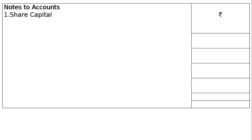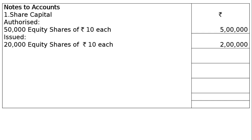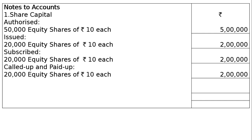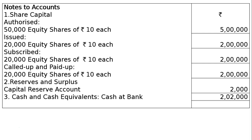Notes to accounts. Note 1 — Share capital: Authorised: 50,000 equity shares of Rs. 10 each = Rs. 5 lakh. Issued: 20,000 equity shares of Rs. 10 each = Rs. 2 lakh. Subscribed: 20,000 equity shares of Rs. 10 each = Rs. 2 lakh. Called up and paid up: same — 20,000 equity shares of Rs. 10 each (we forfeited, reissued, and made fully paid). Note 2 — Reserves and surplus: Capital reserve account Rs. 2,000 (on forfeiture and reissue of shares). Note 3 — Cash and cash equivalents: Cash at bank Rs. 2,02,000. This is the final answer.